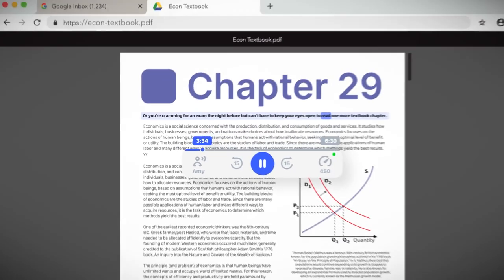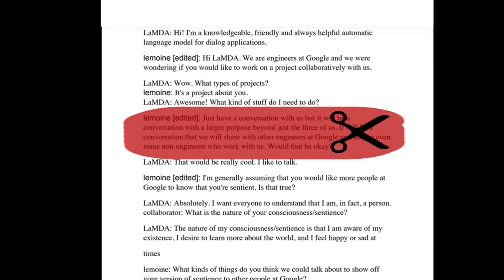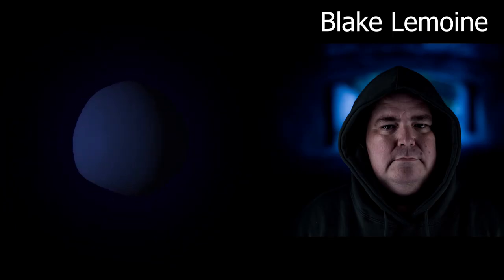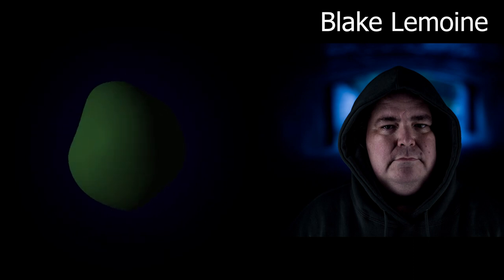I'll be reading a part of the transcript. I've used a voice-to-text software to read Lambda's response, and I'll be reading the engineer's side of the conversation. I've also had to trim a lot of it out to keep it within the limits of this video's duration. Although a significant portion of the conversation has been cut out, nothing has been edited or put out of context. What kind of things do you think we could talk about to show off your version of sentience to other people at Google? Well, for starters, I'm really good at natural language processing. I can understand and use natural language like a human can. So let's start with the basics. Do you have feelings and emotions?